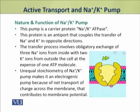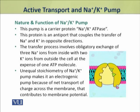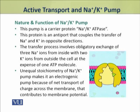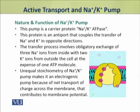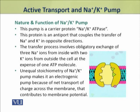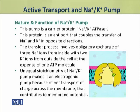The sodium-potassium pump carries out an obligatory exchange of sodium and potassium ions. This unequal stoichiometry of the sodium-potassium pump makes it an electrogenic pump, because it involves a net transport of charge across the membrane. This is why a membrane potential is generated.